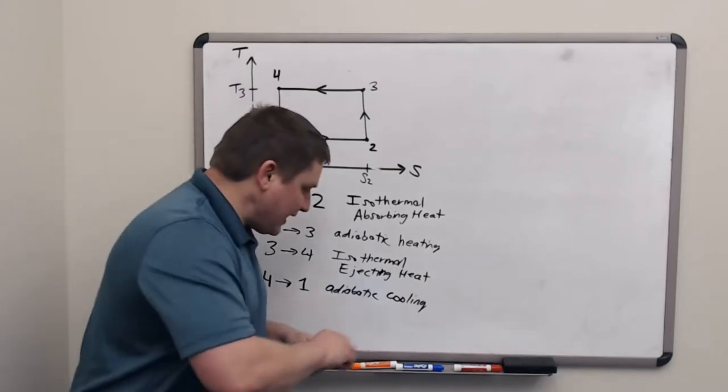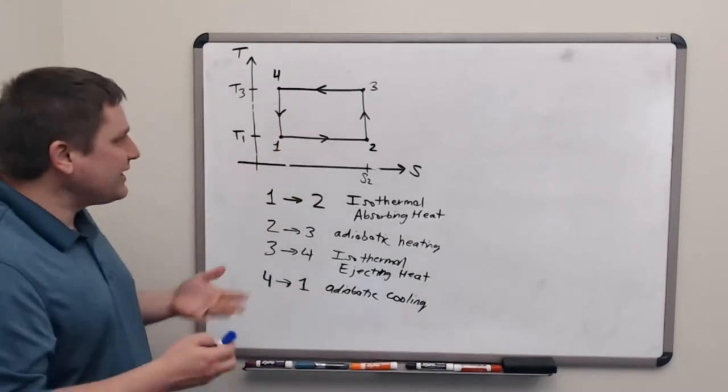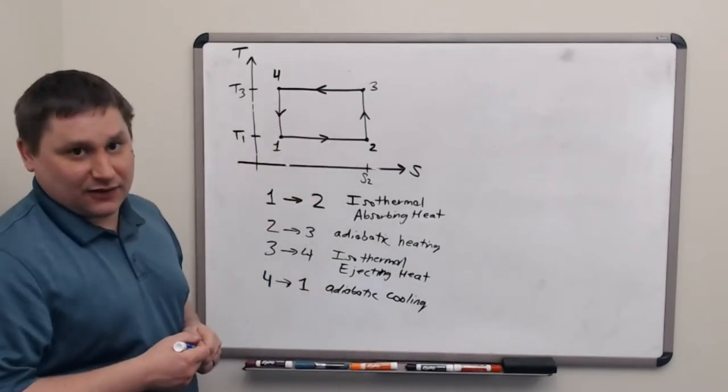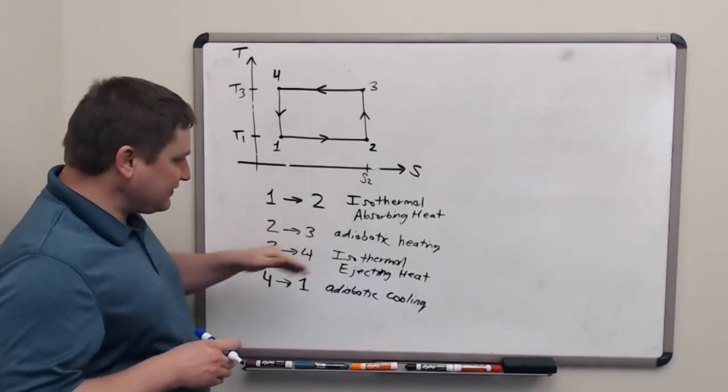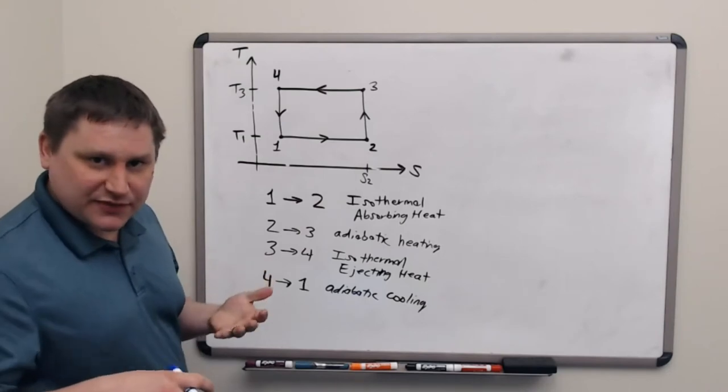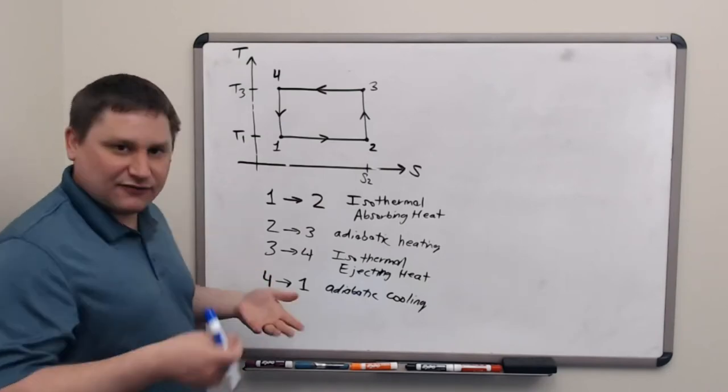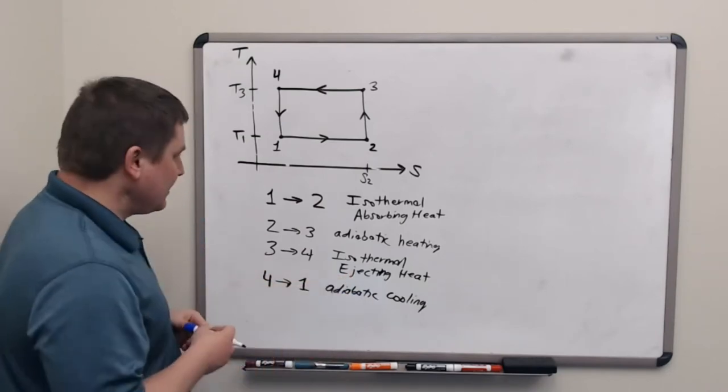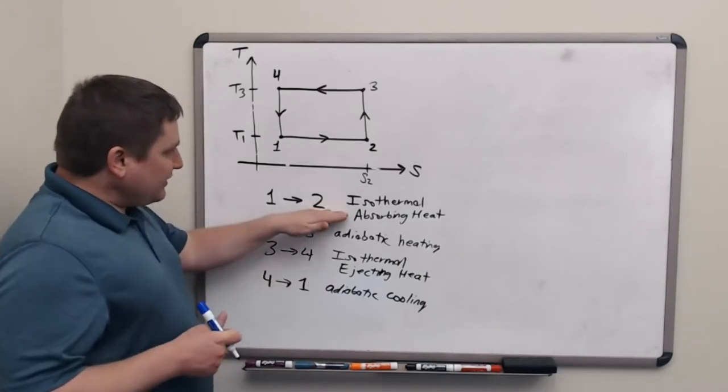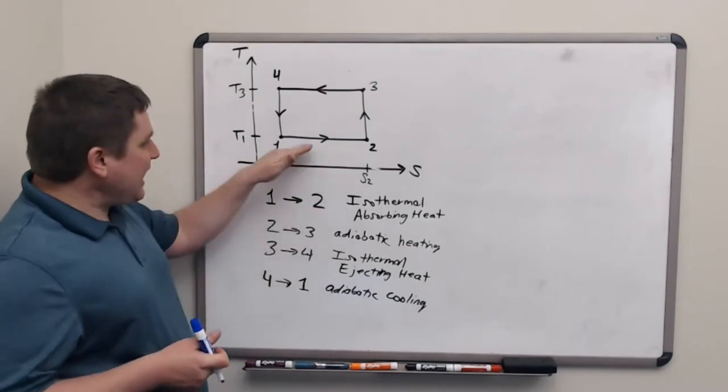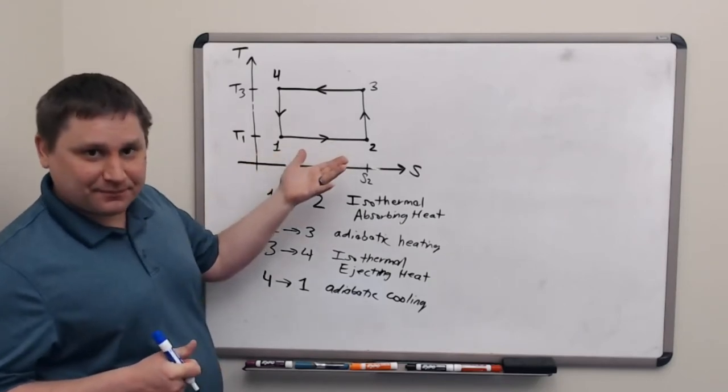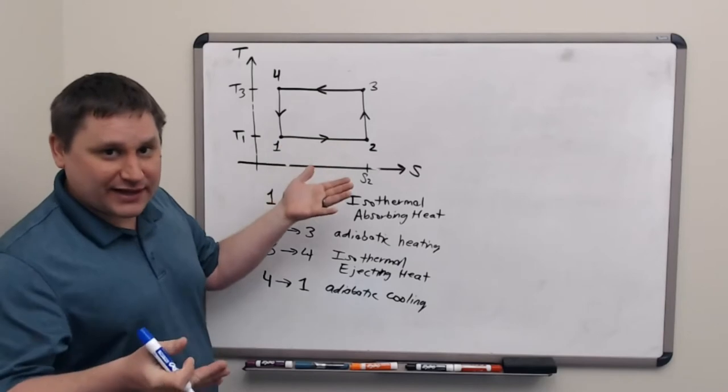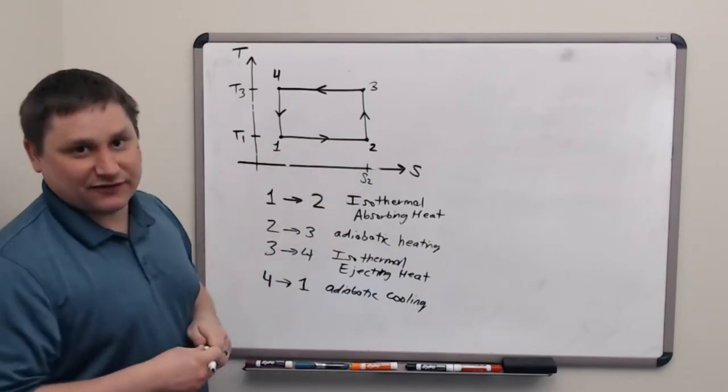But what's really going on here? Why would we care about a cycle that goes counterclockwise? Let's focus, to answer that question, on the two isothermal stages. This is where we do something with heat, this is where we learn kind of what the cycle does. On 1 to 2, we're absorbing heat. And this is peculiar now because we're absorbing heat when we're at a low temperature. We're absorbing heat at our lowest temperature of the cycle.